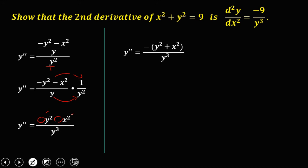From the given equation x² + y² = 9, we substitute into the numerator y² + x², so y double prime equals negative 9 over y to the power 3. Therefore the second derivative of x² + y² = 9 is negative 9 over y³.